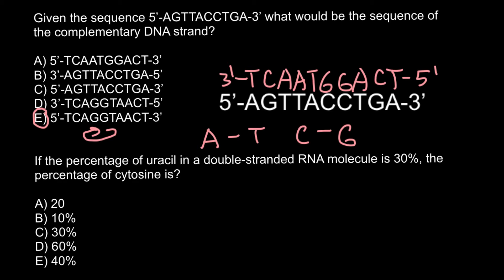Next question: if the percentage of uracil in a double-stranded RNA molecule is 30%, the percentage of cytosine is? Here we see five answers to choose from. Once again, in order to solve this problem, we are going to use Chargaff's rule.